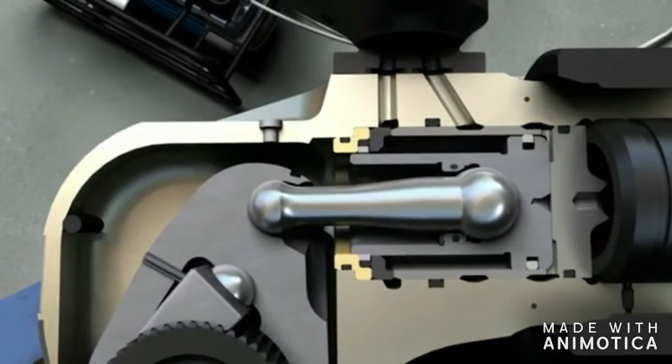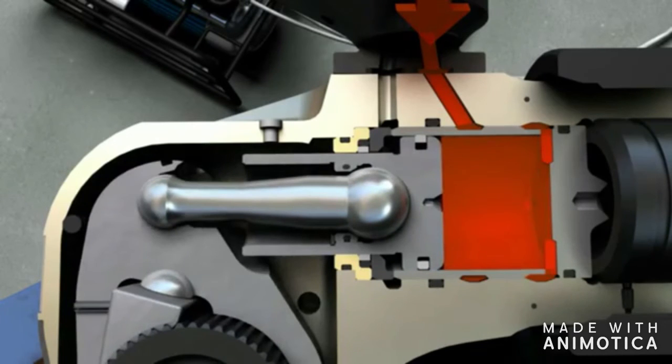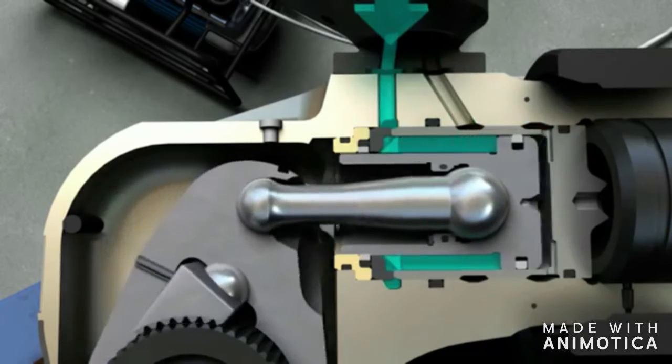The integrated release shock absorber protects the housing from sustaining impact damage during an abrupt release. The piston separates from the lever and reconnects automatically. This reliably prevents the piston lever connection from rupturing.